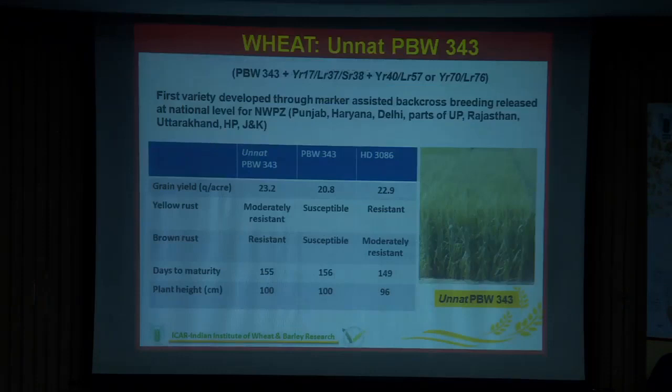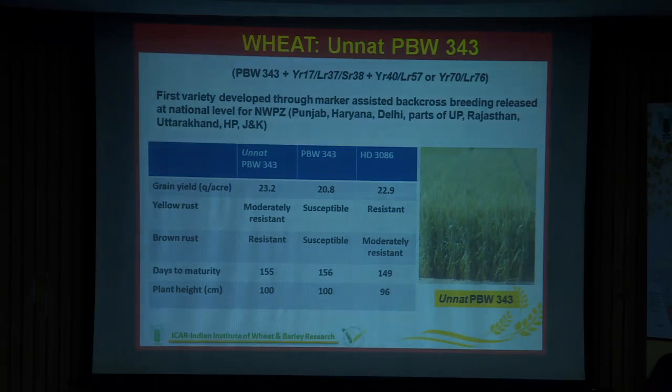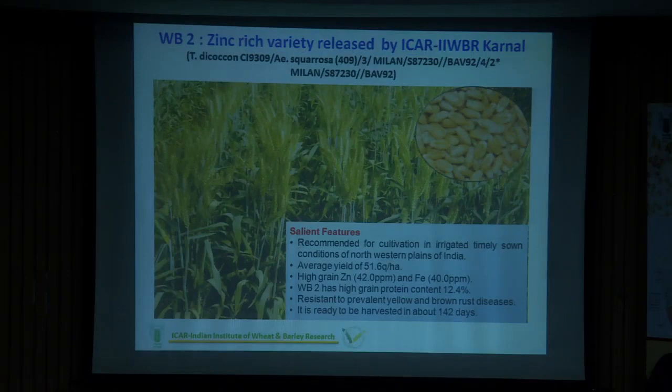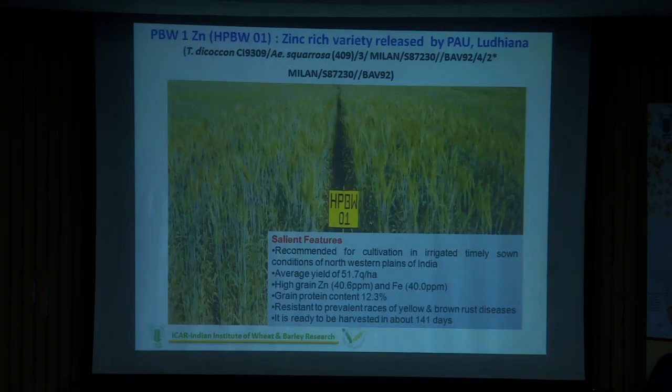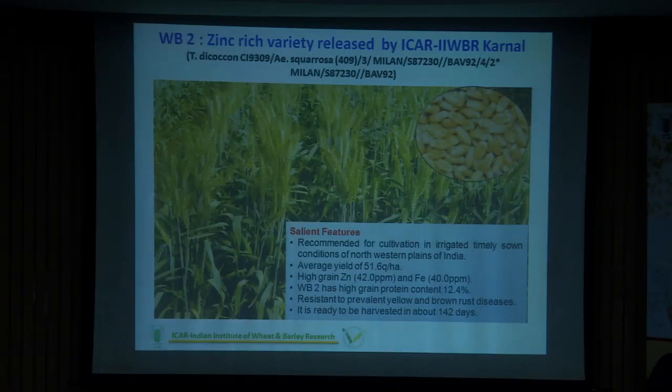PBW723 is supposed to be the improved version of PBW343. Genes Yr17 and Yr40 — which are yellow rust resistance allelic genes — were combined or introgressed into this variety through marker-assisted selection. At the same time, bio-fortified varieties WB2 and HPBW01 were released together in the same year. We proposed them as India's first bio-fortified wheat varieties.